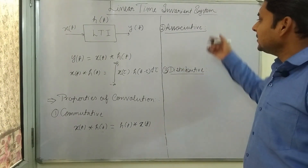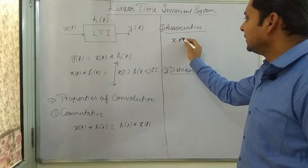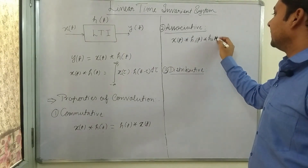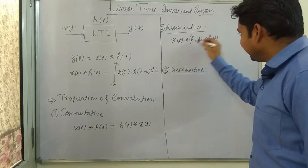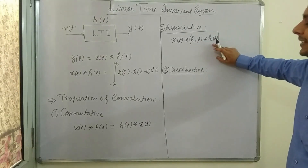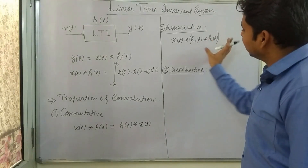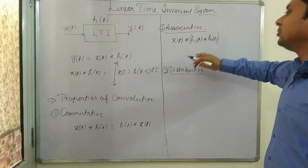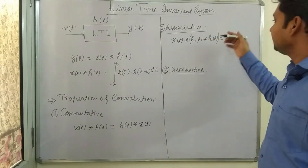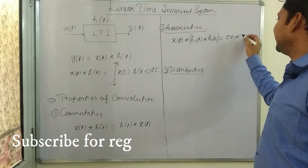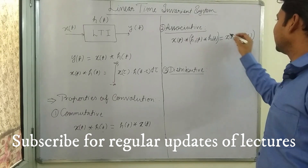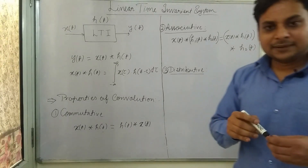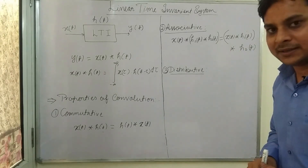Now, the associative property. If there are three functions — x(t), h₁(t), and h₂(t) — we can first do the convolution of h₁(t) and h₂(t), and whatever is the output, that output will be convolved with x(t). The result will be exactly equal to when we convolve x(t) with h₁(t) first, and then convolve that result with h₂(t). This kind of property is known as the associative property.